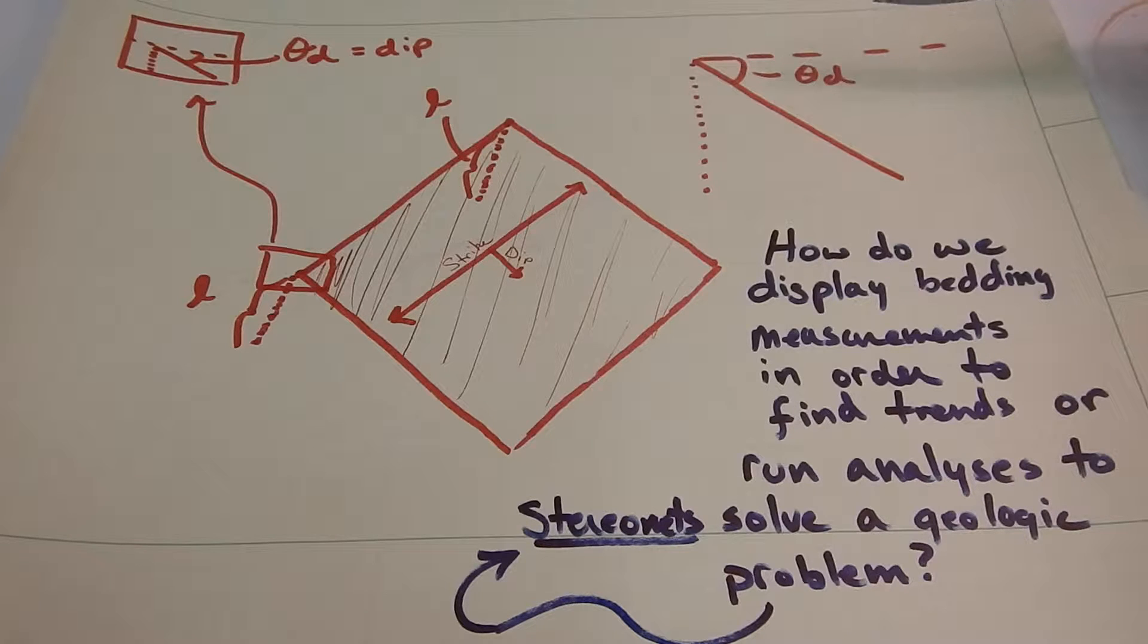So what we'll be doing today is using that strike and dip to plot planes in a stereo net.